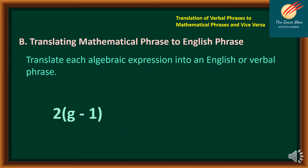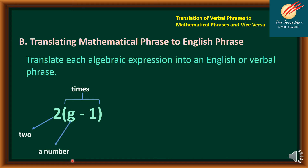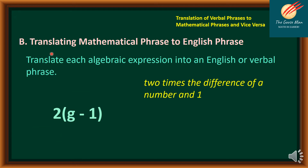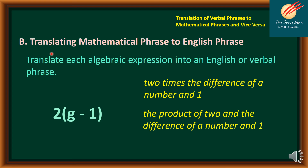Let's have another example: 2 times the expression (G minus 1). Here, 2 is multiplied — the open and close parenthesis indicates times. Then we have G as a number, minus indicating the difference, and 1. To translate into verbal phrase: "2 times the difference of a number and 1," or "the product of 2 and the difference of a number and 1."